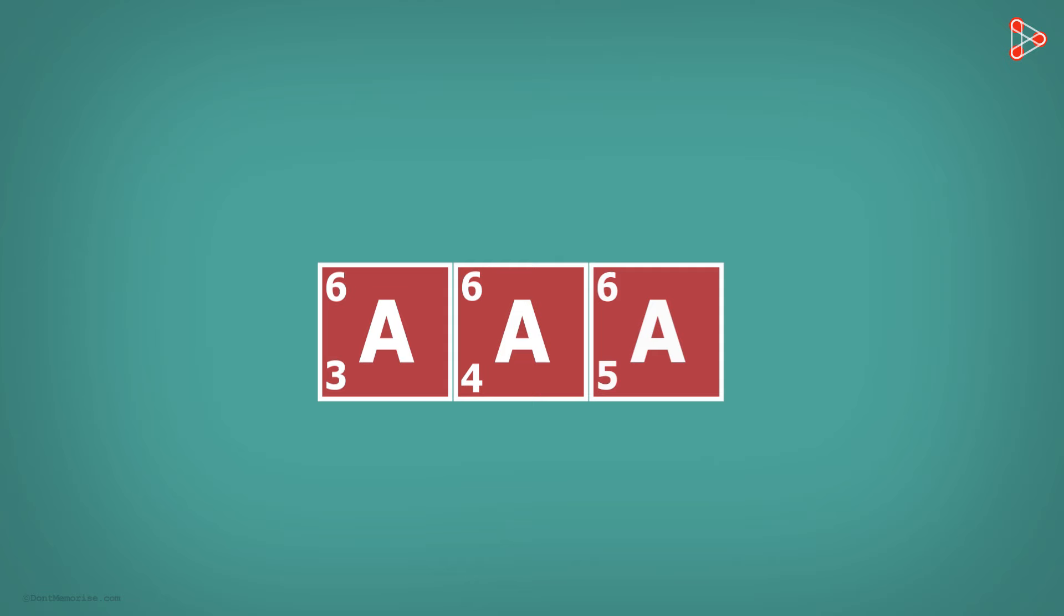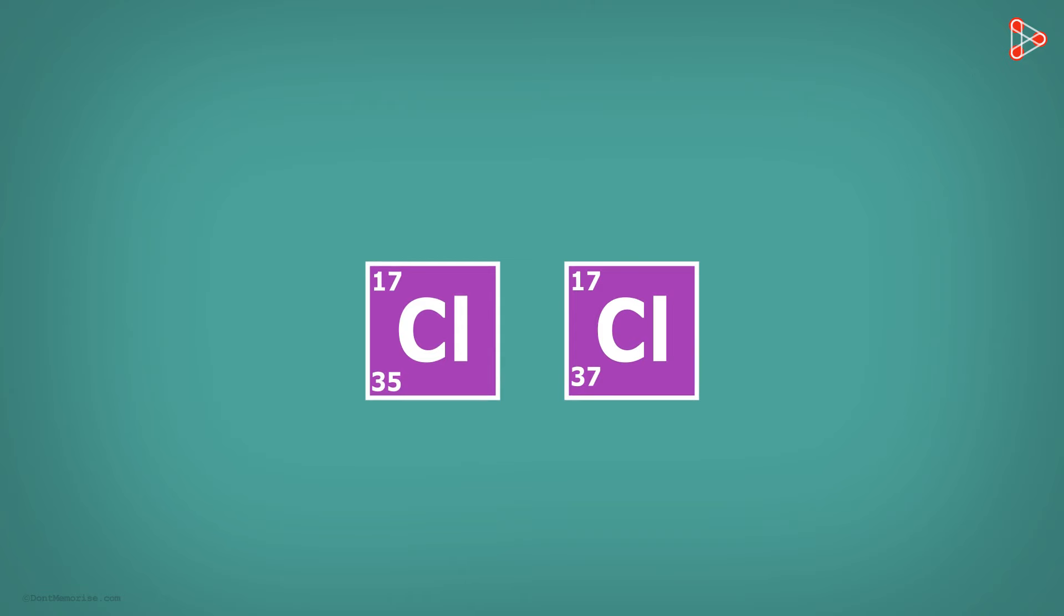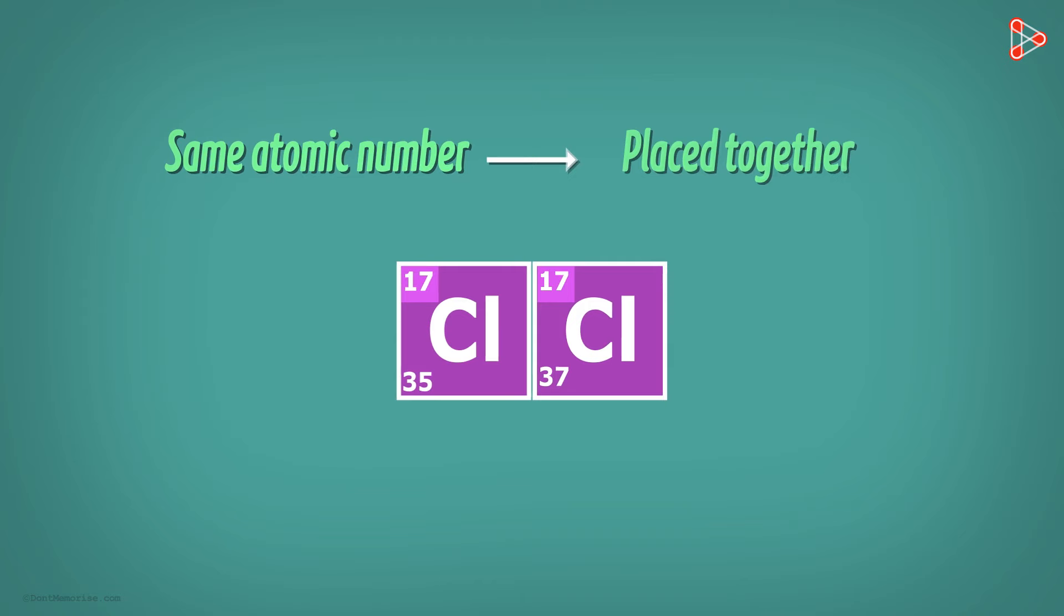And this place would be the position of that element in the table. So now can we say that chlorine-35 and chlorine-37 will be placed together? They both have 17 protons, which means they will have the same atomic number. Hence they will be placed together.